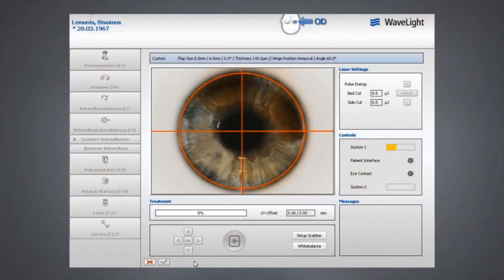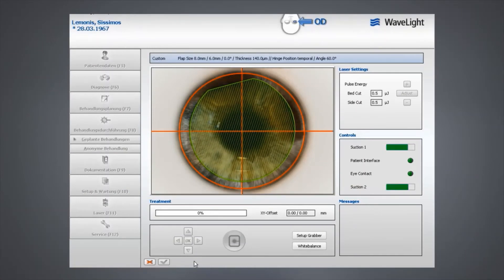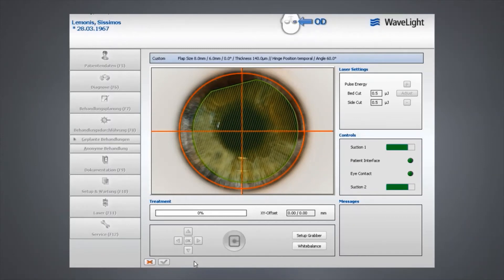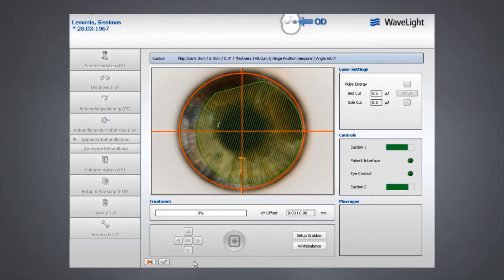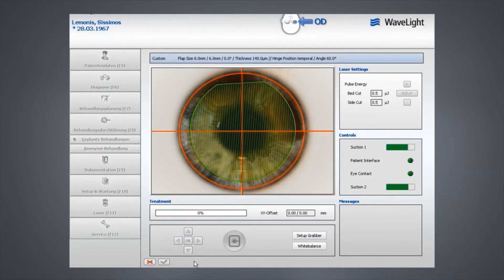The Wavelight FS200 femtosecond laser offers the physician the unmatched ability to adjust the placement of the flap even after the suction ring has been applied. By shifting the placement grid before the flap is created, the physician may customize flap placement to best fit the ablation profile of their patient.